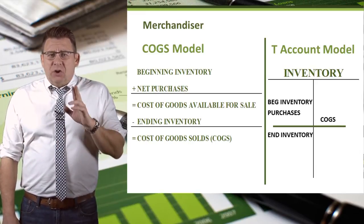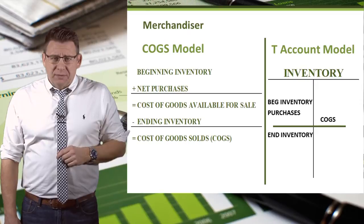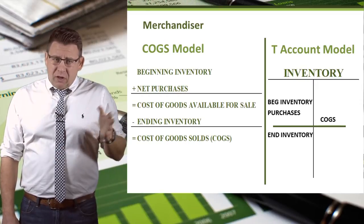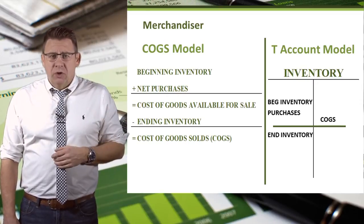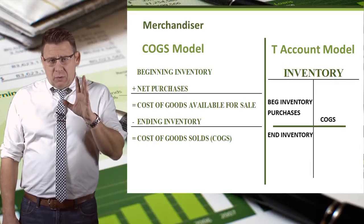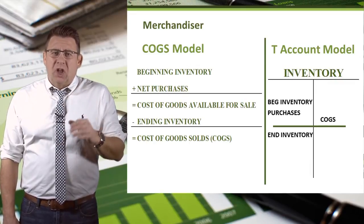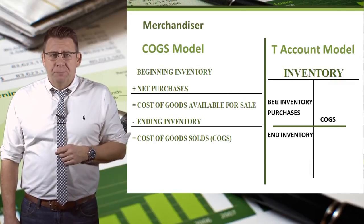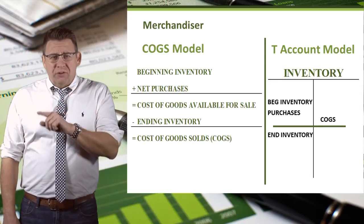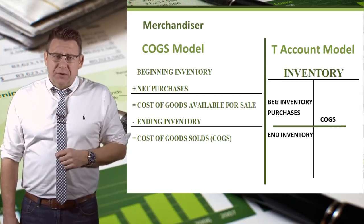Finally, there are only two things we can do with our products. We can sell them, which we call cost of goods sold, or we can still have them at the end of the period, which we call ending inventory. And if we know one of those amounts, we can calculate the other.